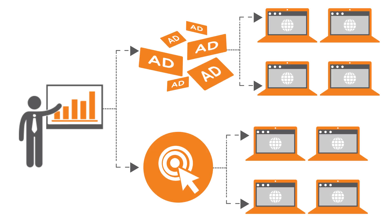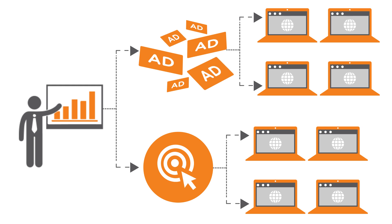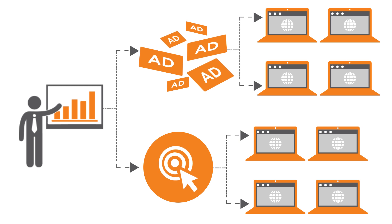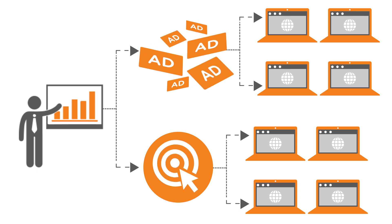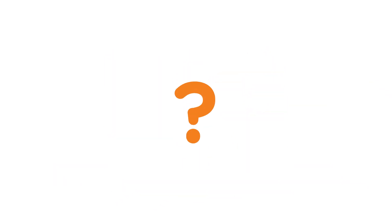But advertisers still had scalability challenges. They might run different ads and campaigns on different sites, which required emailing bulky files to each publisher. A big hassle. It was also hard to get timely and reliable performance data.